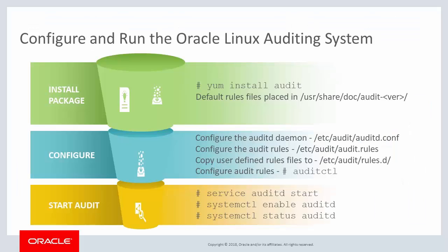To configure and run the Oracle Linux auditing system, you first install the audit package and its dependencies with a simple yum install audit command. The package also installs some default rules files in the user directory, which you can use at your discretion. The audit daemon is pre-configured with useful default settings, but it can be further modified for your specific auditing requirements. You define your audit rules in the audit.rules file or in separate rules files placed in the rules.d directory. Remember, you can define rules with the auditctl command, but rules configured this way will not persist after a reboot. The audit service can be started and stopped using the service command, and the systemctl command can be used to have the auditd service start when the system boots.